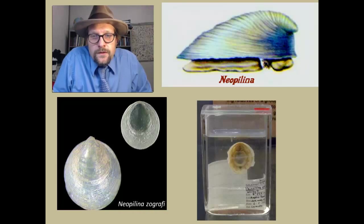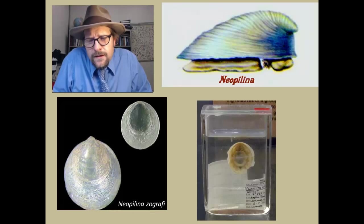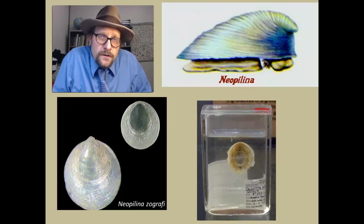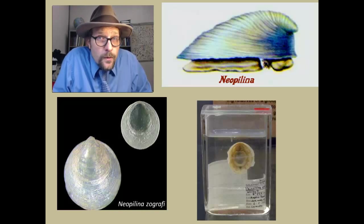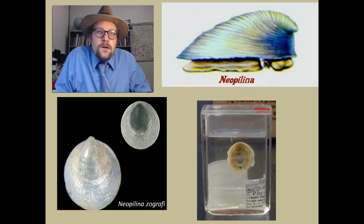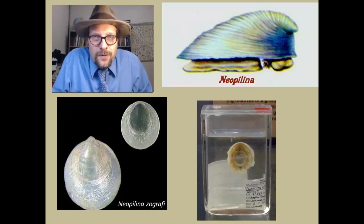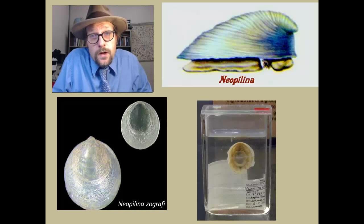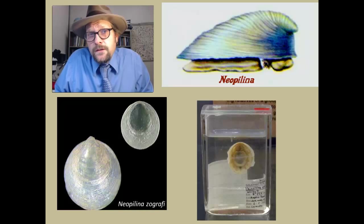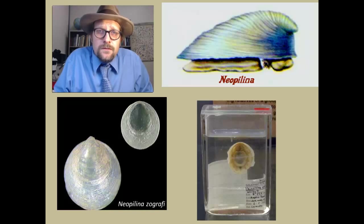One interesting realization was that Neopilinia was segmented, meaning that it had a series of gills and muscles. This suggests that Neopilinia and all other molluscs are closely related to annelid worms. Annelid worms are a group that includes earthworms and other worms with segmented bodies. Molecular analysis of molluscs and living annelid worms support a close relationship between these two groups. Sadly, we are not going to be talking much about the fossil record of annelid worms, because beside trace fossils, there is not much of a fossil record of these.